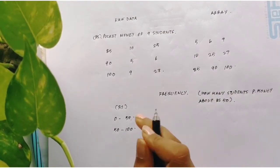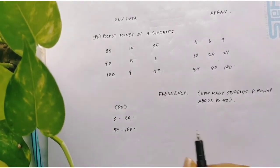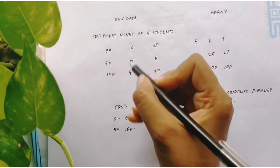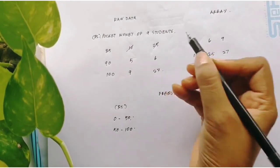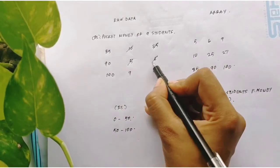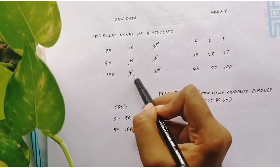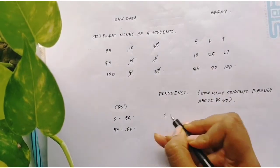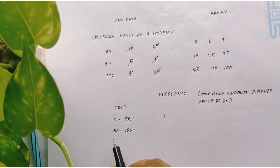That means 0 to 50 rupees is received by how many students here? How many students have received 0 to 50 rupees? See rupees 10 is less than 50, 25 less than 50, less than 50, less than 50. So how many students? 1, 2, 3, 4, 5, 6 students have received pocket money ranging in this group 0 to rupees 50.